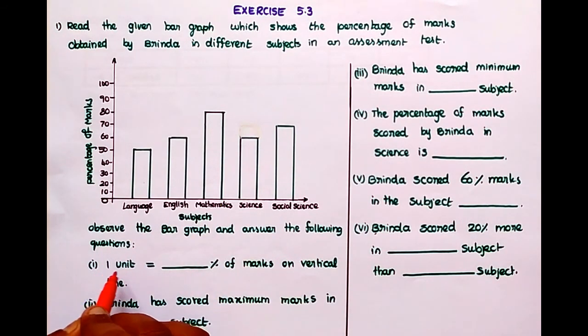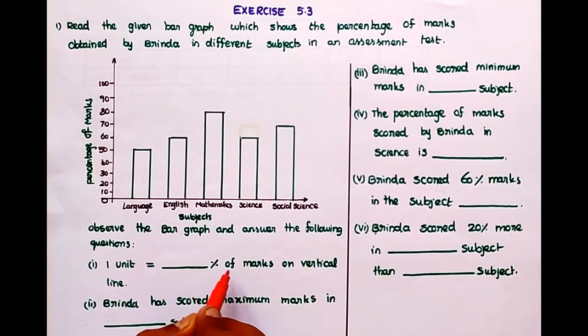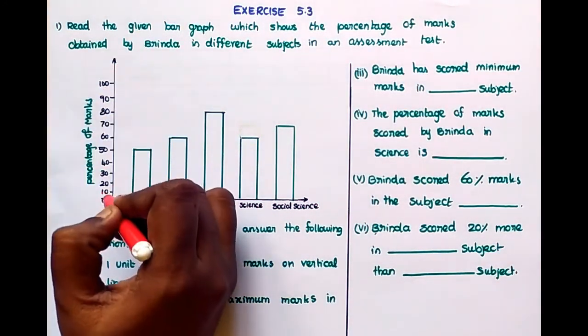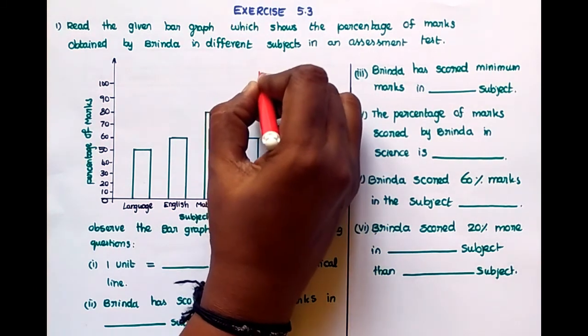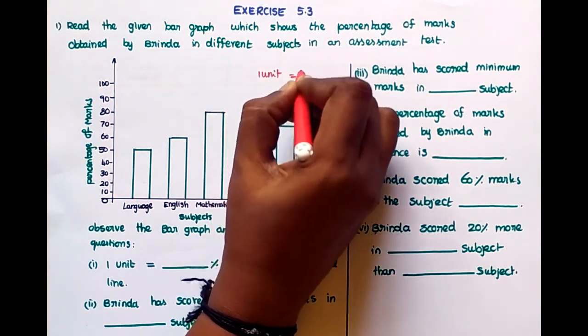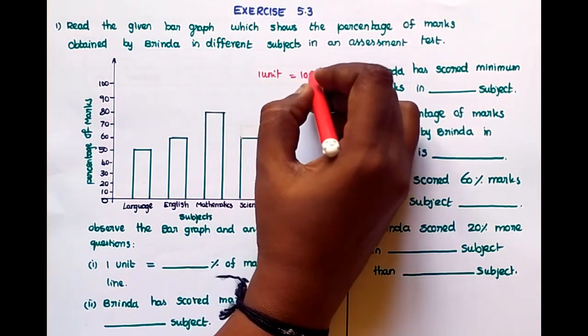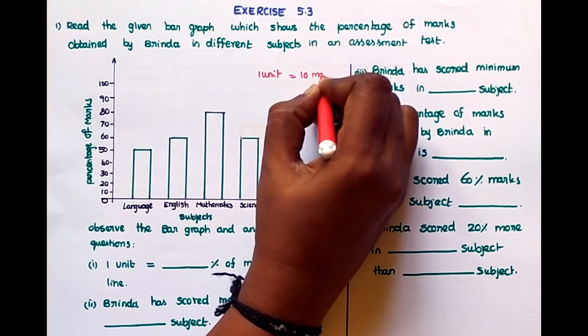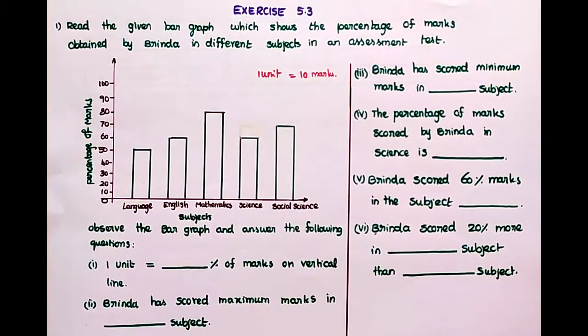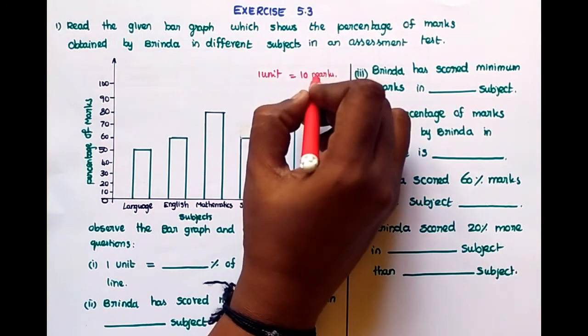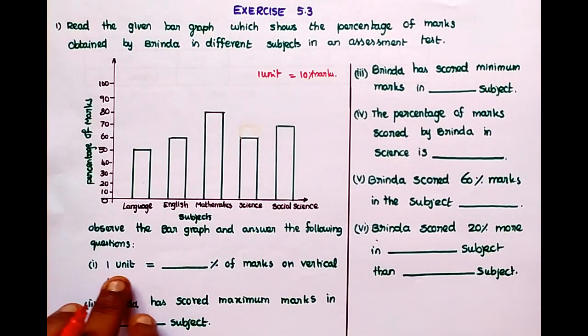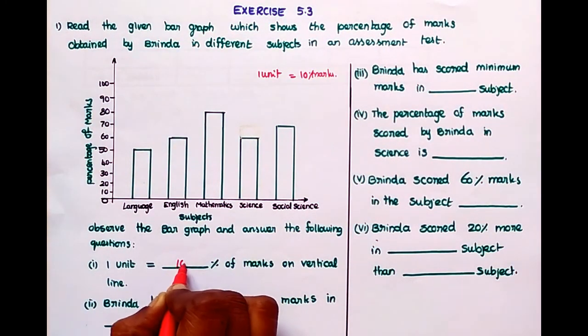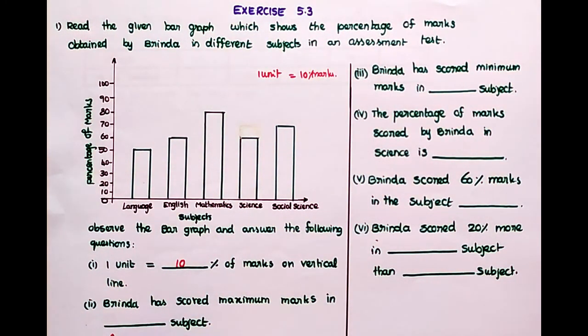First, one unit equal to how many percentage of marks on vertical line? In vertical line, 10, 20, 30, that means one unit equals 10 marks. Sorry, 10 percentage of marks. One unit equals 10 percentage of marks.